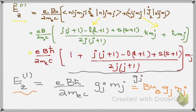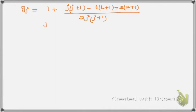At j = l + s, when l = 0, j = s, we have gj = 2.